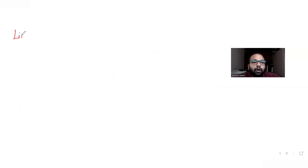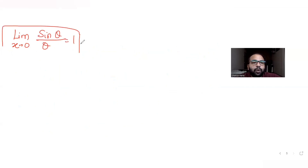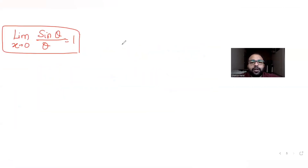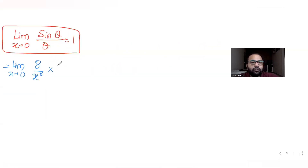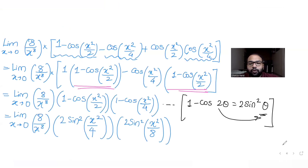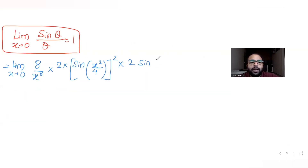We know the standard limit: limit x tends to 0 of sinθ/θ equals 1. Using this idea, I rewrite the expression: limit x tends to 0, 8 upon x raised to 8, into 2sin²(x²/4) into 2sin²(x²/8). I express each sine-squared term as [sin(x²/4)]² and [sin(x²/8)]² to match the sinθ/θ form.